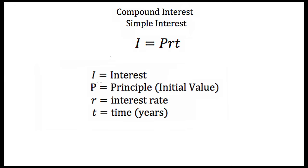I is our amount of interest. P is our principal — this is the amount of money that we originally invest or that we originally loan. R is our interest rate. Usually you get interest paid as a percentage of the initial investment or the initial loan, so R is usually a percentage. If we had a 5% interest rate, when we plugged it into this formula, we would plug in the decimal version: R is equal to 0.05.